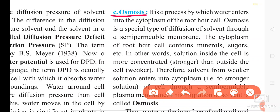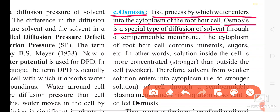By osmosis, it is the process by which water enters into the cytoplasm of the root hair cell. Osmosis is a special type of diffusion of solvent through a semi-permeable membrane. This diffusion is a special type because in this process the solvent enters through the semi-permeable membrane, and that is why this process is called osmosis.